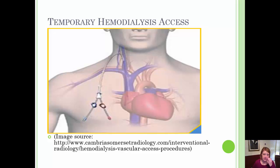The temporary hemodialysis access catheter is shown here in this picture. In this picture there are two ports, the red port and the blue port — one being for blood from the body and one being for returning blood to the body from the machine. Sometimes you'll often see a hemodialysis catheter that has three ports, such as the one I've showed you in class. That one has what's called a pigtail, which is the third port.